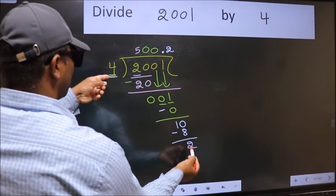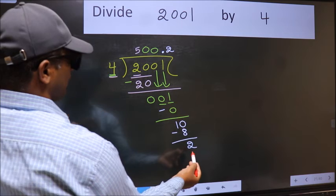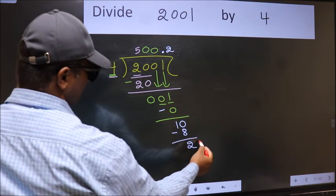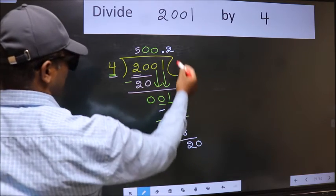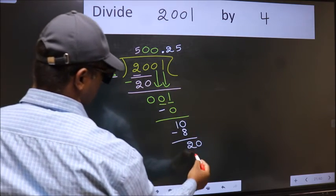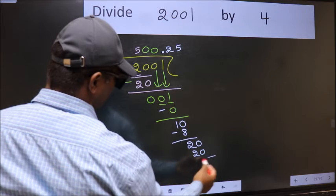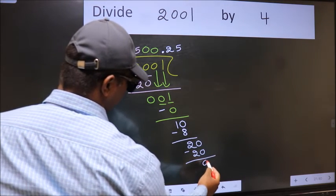2 is smaller than 4 and we already have the decimal. So directly take 0. So 20. When do we get 20 in the 4 table? 4 times 5, 20. Now we should subtract, we get 0.